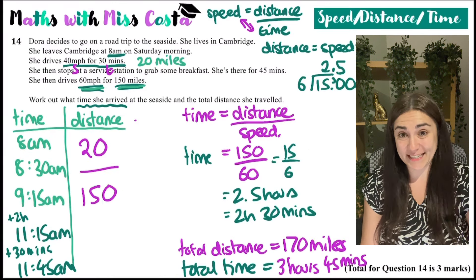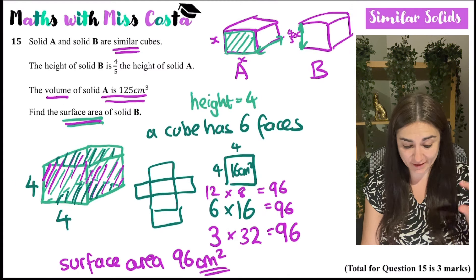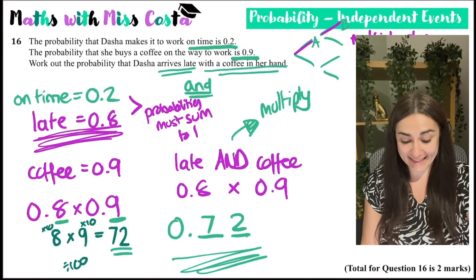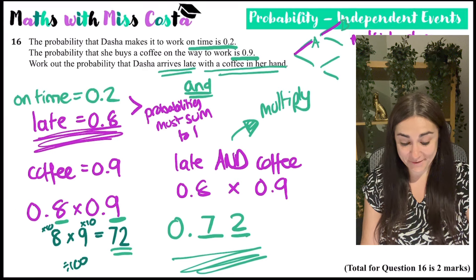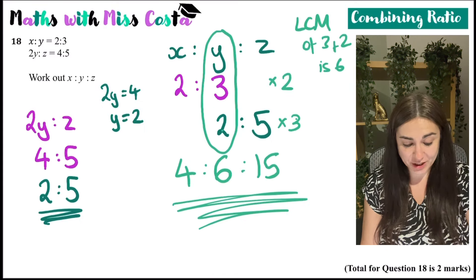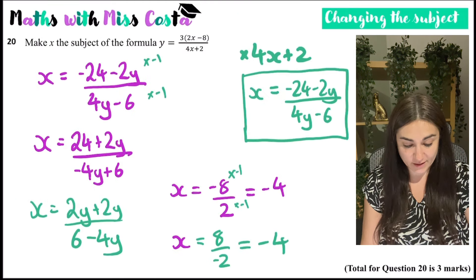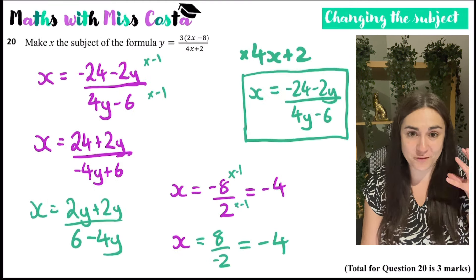Thirteen is recurring decimals to fractions. Fourteen is a speed distance time. Fifteen is similar solids and ratio. Sixteen is probability. Seventeen is gradients of perpendicular lines. Eighteen is combining ratios. Nineteen is dividing with standard form. Twenty is changing the subject where you have to factorise.